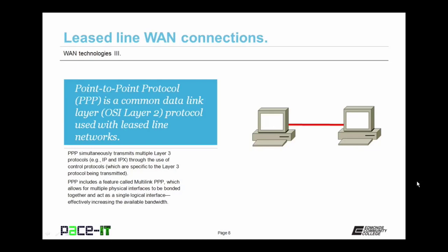One of the leased line technologies you need to know about is Point-to-Point Protocol, or PPP. It is a common data link layer — Layer 2 — protocol used with leased line networks. PPP can simultaneously transmit multiple Layer 3 protocols — it can transmit IP, IPX, and AppleTalk all at the same time through the use of control protocols specific to the Layer 3 protocol being transmitted. PPP can include a feature called Multilink PPP, which allows multiple physical interfaces to be bonded together and act as a single logical interface, effectively increasing the available bandwidth.